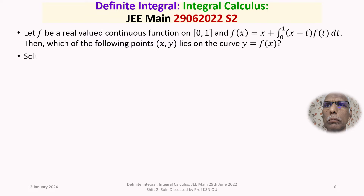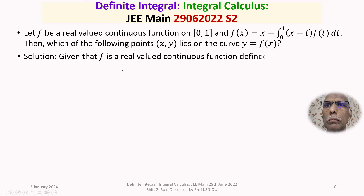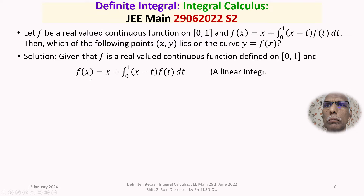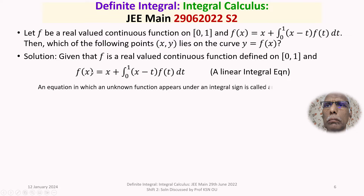We now discuss the solution in detail. We are given f is a real-valued continuous function defined on the closed interval [0, 1], and f(x) = x + ∫₀¹ (x − t)·f(t) dt. This is an integral equation — an equation in which the unknown function f(x) appears under the integral sign is called an integral equation. Here f(x) is the unknown function appearing under the integral sign as well.